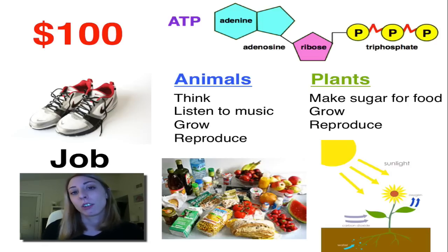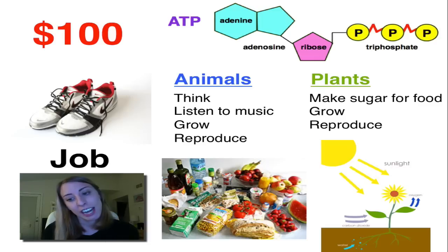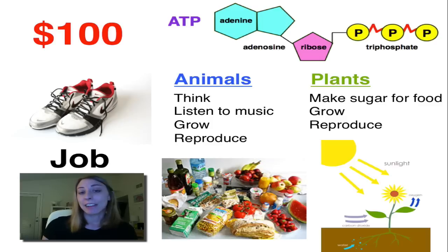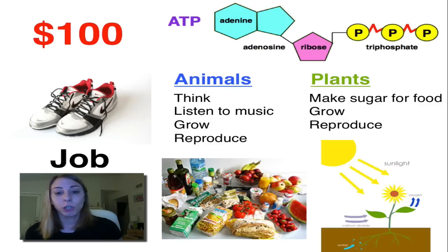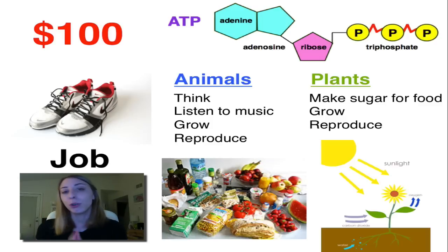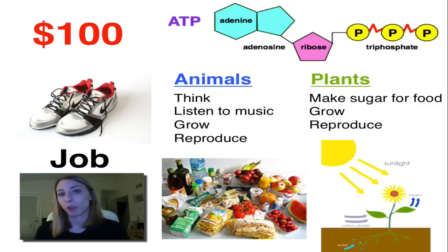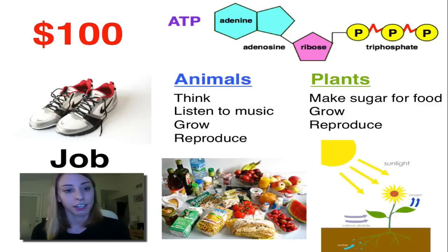Plants also need ATP to grow and to reproduce. Now, just like you would need to have a job to buy shoes, you would actually need to consume food if you're an animal to make ATP — the currency. And if you were a plant, you would need to go through photosynthesis to get the food to make the currency.